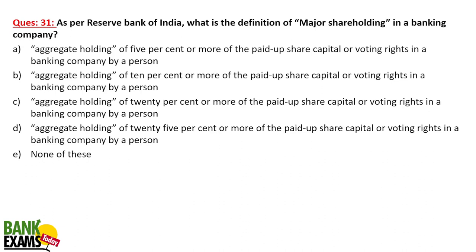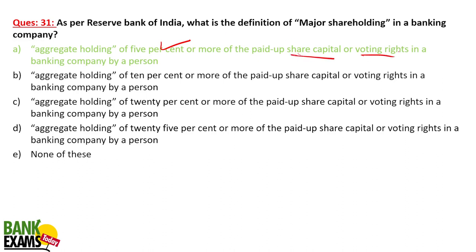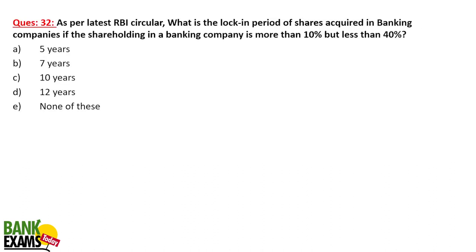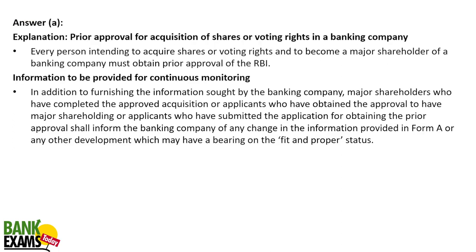As per RBI guidelines, what is the definition of major shareholding in a banking company? Aggregate holding of 5% or more of the paid-up share capital or voting rights in a banking company by any person constitutes major shareholding. What is the lock-in period for shares acquired in a banking company if the shareholding is more than 10% but less than 40%? The lock-in period is 5 years — shares cannot be sold during this period.